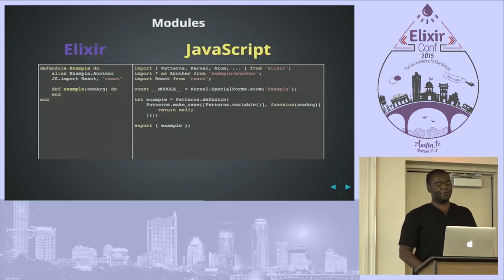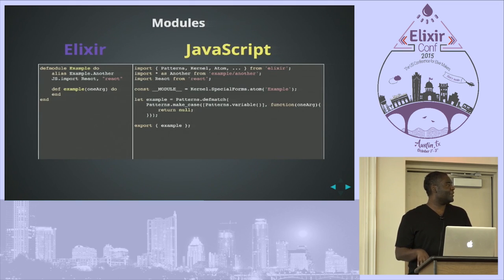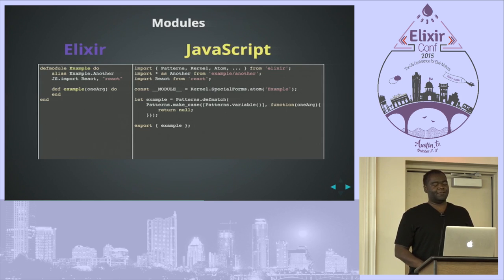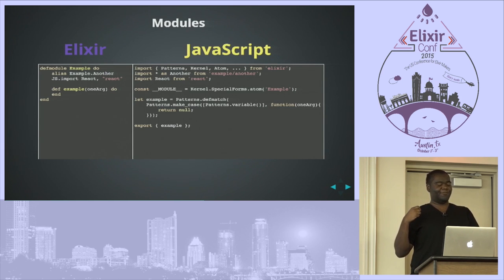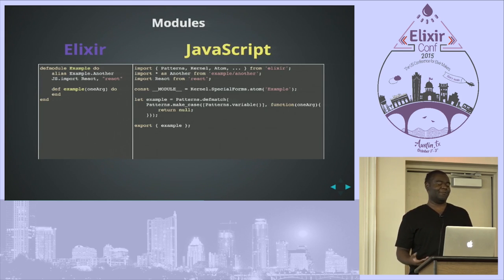For modules: one of the first things the compiler does is go through the code, find all the modules, and store them along with all the functions and macros within each module. This is useful specifically for handling imports in Elixir. In JavaScript when you're importing something using an ES6 module, you have to specifically define what you're trying to import, which doesn't map well to Elixir import statements. By getting a list of all functions, we can support that. Alias, import, and require kind of work, but they have to be at the outer scope, and require doesn't add macros yet.